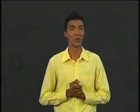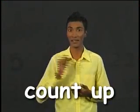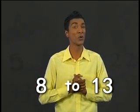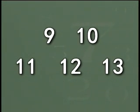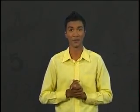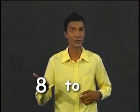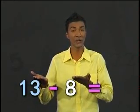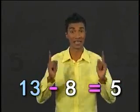Subtraction can also be used when we count up. Remember counting up? For example, if we count up from 8 to 13, how many numbers have we counted up? We have moved up 5 numbers. Now let's use subtraction and see if we get the same answer. We were counting up from 8 to 13. So the bigger number 13 minus the smaller number 8 equals 5. Yes, we get the same answer.